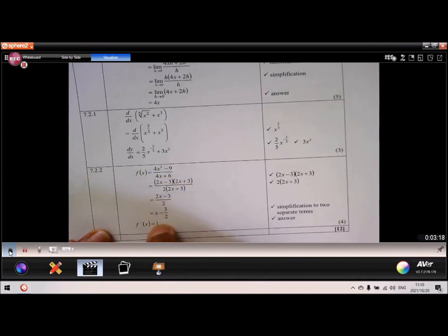Divide 2 into 2x. You get x. Divide 2 into 3. You get 3 over 2. Then the derivative of x is 1. And the derivative of a constant is 0. And that gives you your answer.